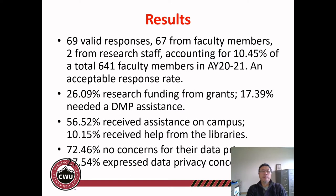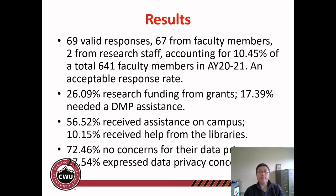We found about 26% of our researchers said their research funding was from grants. However, only 70% of those researchers said they had to submit a DMP when they submitted their funding applications. Also, about 57% of our researchers confirmed they received assistance on campus, but only 10% confirmed they received help from the libraries.